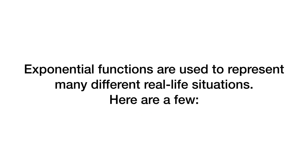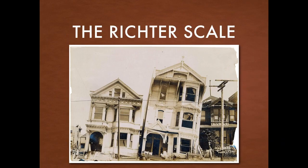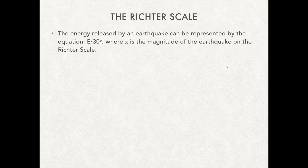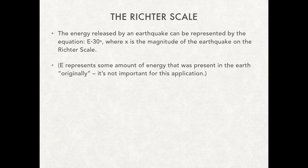Exponential functions are used to represent many real-life situations. We're going to start with the Richter scale, which is about earthquakes. The energy released by an earthquake can be represented by the equation E times 30 to the x, where x is the magnitude on the Richter scale. E represents the capital letter E — some base level of energy present in the earth originally, kind of like your room tone or white balance before you do anything.